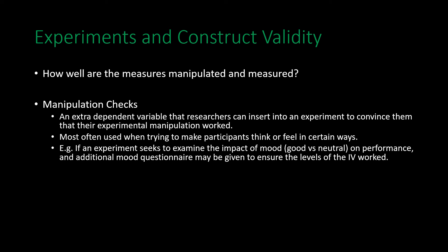Manipulation checks are additional dependent variables that researchers can insert into an experiment to show that their experimental manipulation actually worked. They are most often used when trying to make participants think or feel in certain ways — similar to a mood induction. For example, if an experiment examines the impact of mood — good versus neutral — on performance, an additional mood questionnaire might be added to ensure the mood manipulation actually worked. The assumption is that those in the good mood condition would have higher scores on the mood questionnaire than those in the neutral mood condition.